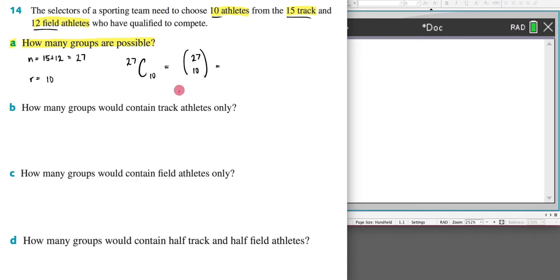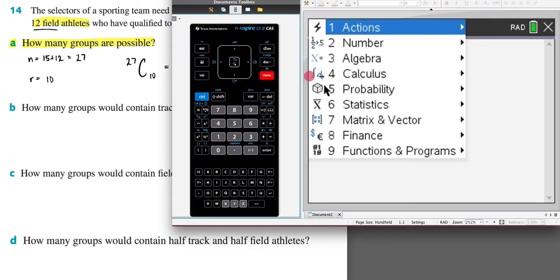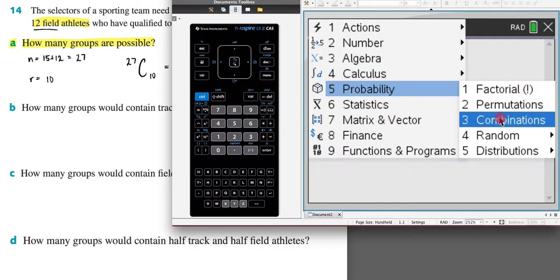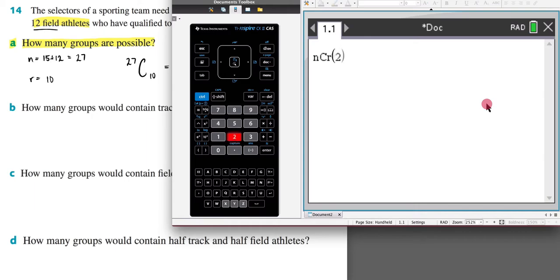Now I'm going to use my CAS to solve this. So I'm going to come over here and go menu, probability, combinations and type in my n value first and then my r value so 27 and 10 and that's going to give me my answer.